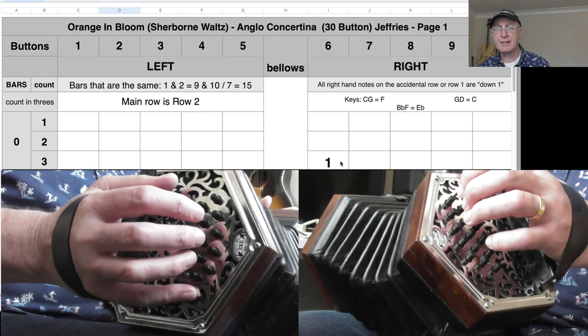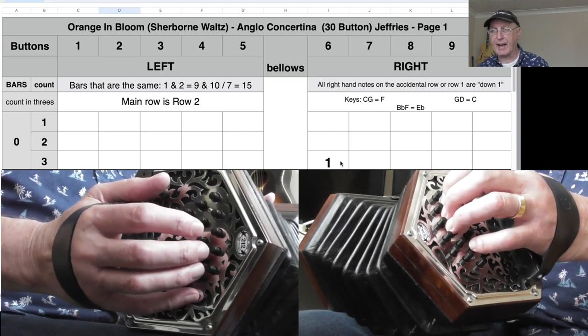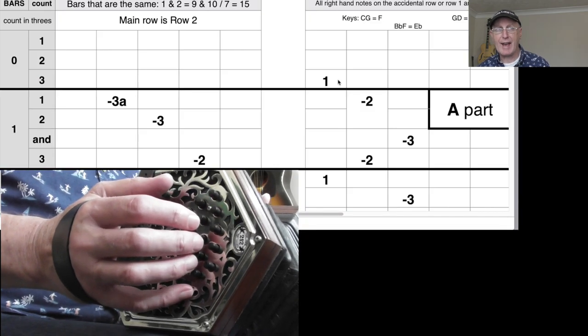So a very straightforward start, come in on beat three with that note and then you go to the beginning of the A part and bar number one. Let's look at the right hand side first of all.